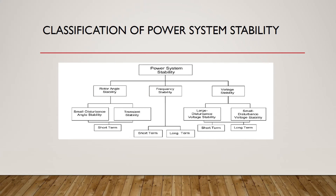The classification of power system stability is divided into three main types: rotor angle stability, frequency stability, and voltage stability. Rotor angle stability has two subtypes — small disturbance and transient (large disturbance) — both short-term. Frequency stability has short-term and long-term subtypes. Voltage stability consists of large disturbance and small disturbance subtypes, with both short-term and long-term considerations. In the next video we will discuss rotor angle stability and frequency stability, and another video will cover voltage stability.